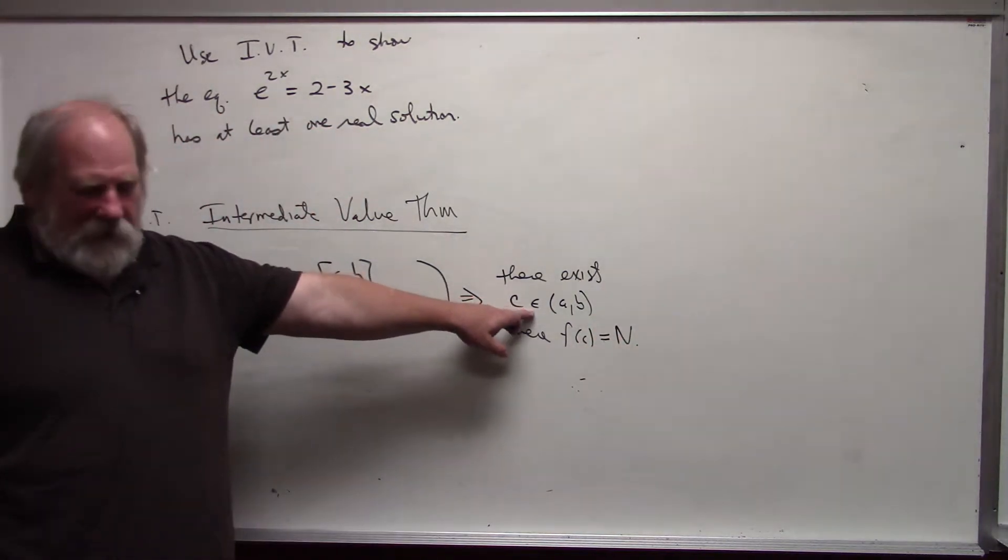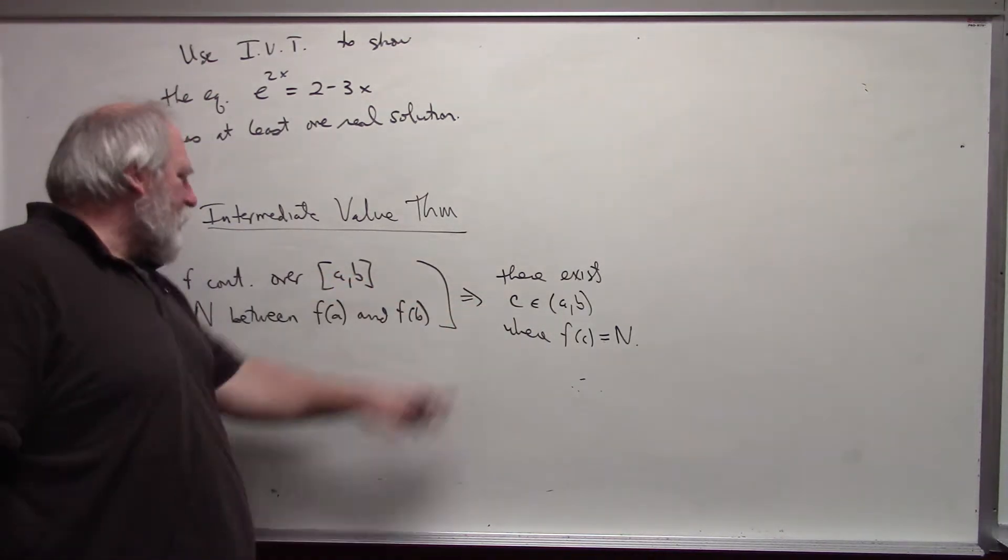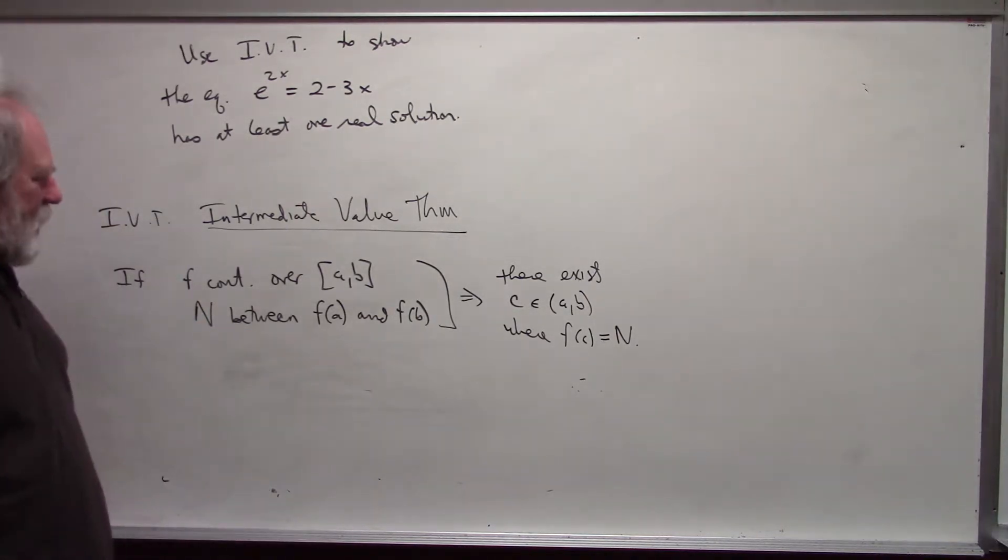This is the symbol 'element of'. It means a member of the set. Again, open interval, we don't include the endpoints. Closed interval, we include the endpoints. This is what IVT says.